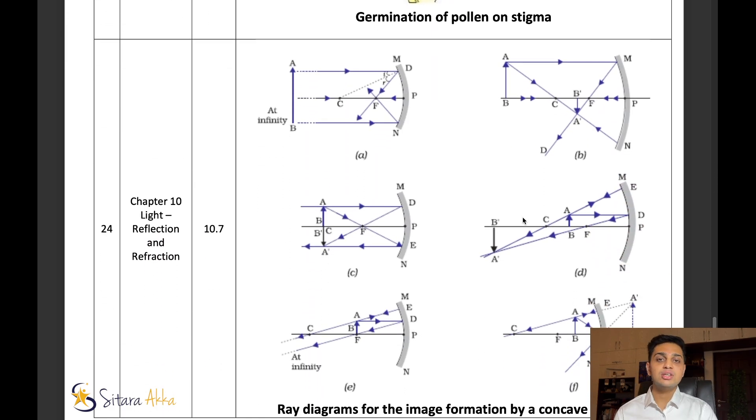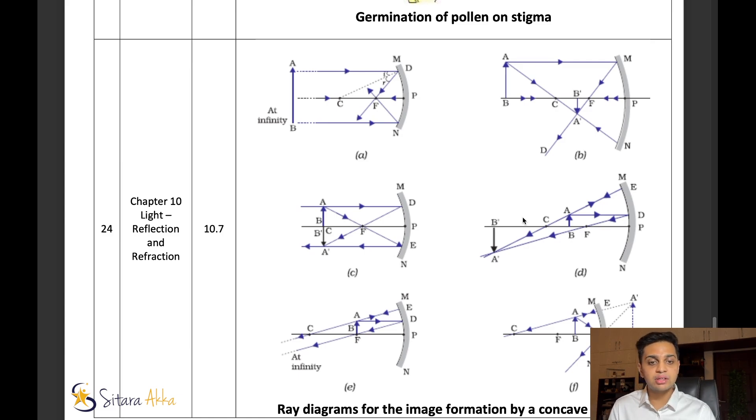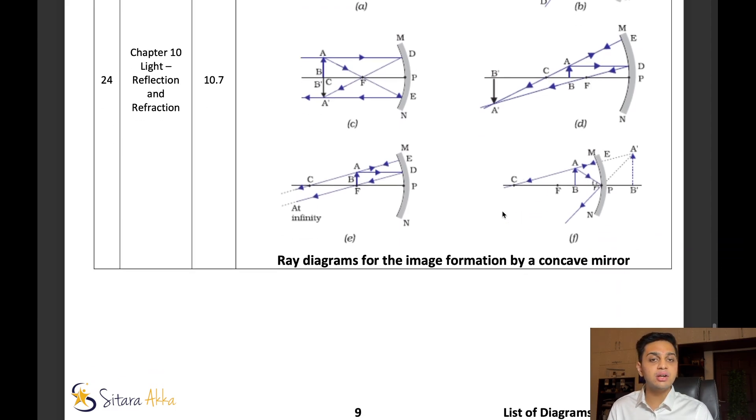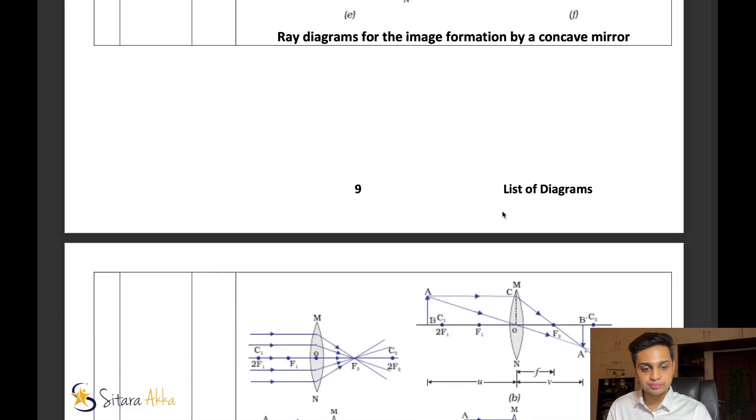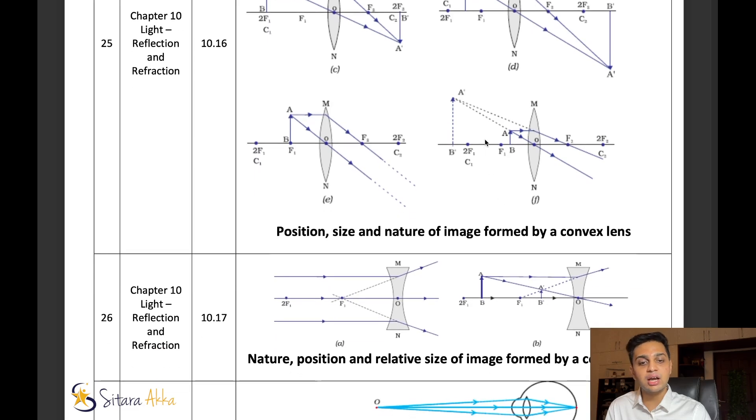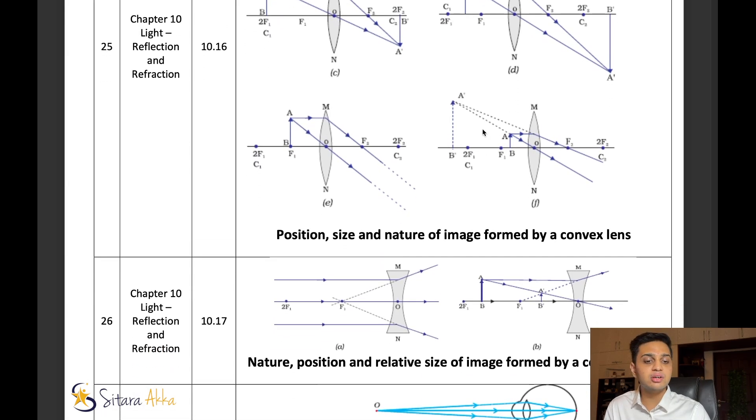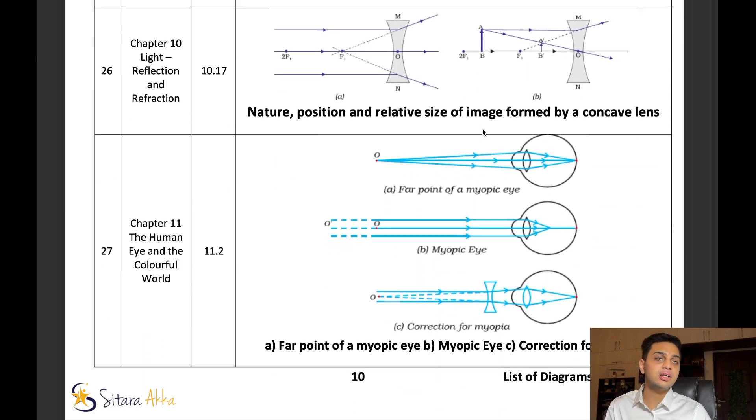Next chapter is going to be light. For the ray diagrams, I would like to suggest: do not mug up these ray diagrams. Try to understand how these rays are being formed. Three important rules are being used to draw all the ray diagrams. Understand those three important rules, and you do not have to mug up the diagrams. One tip for ray diagrams: always mark the direction in which the ray is going and being reflected. All the ray diagrams in this chapter are very important: for convex mirror, convex lens, concave mirror, concave lens, and then human eye and the colorful world.